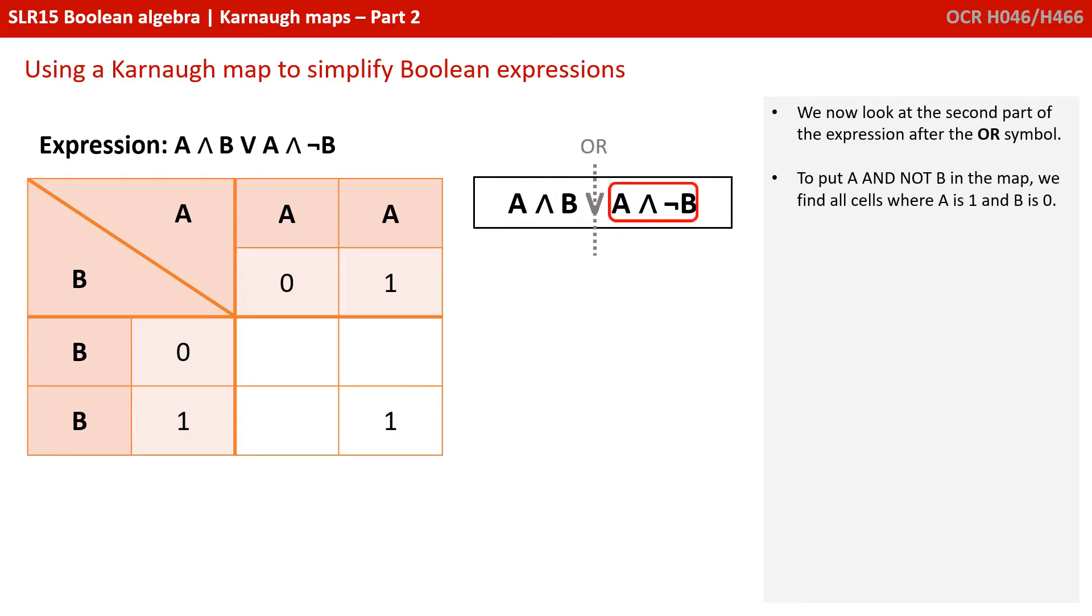We now look at the second part of the expression after the OR symbol. To put A and not B in the map, we find cells where A is one and B is zero, because it's not B. Again, there's only one location where this is the case, so we put a one in this cell.